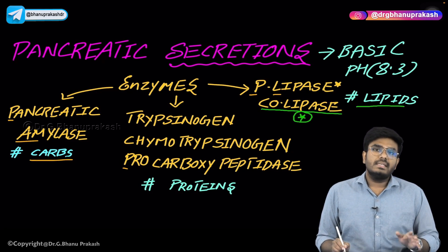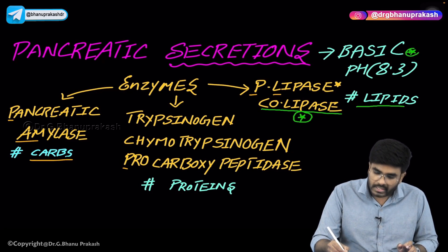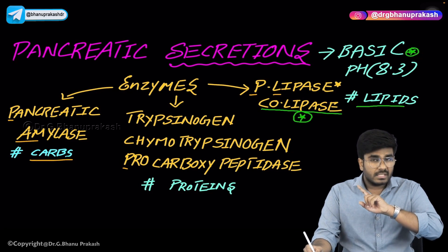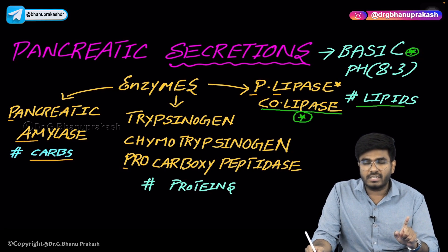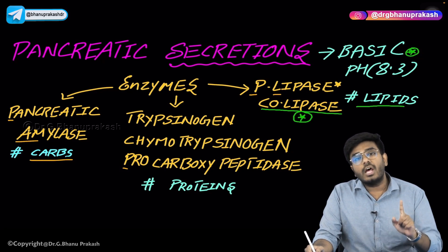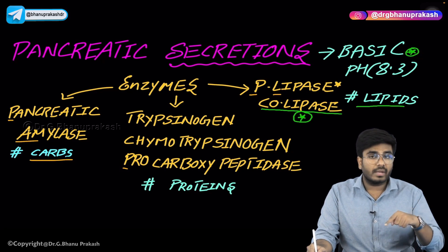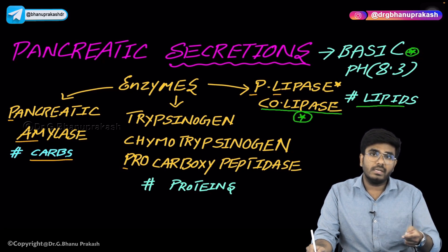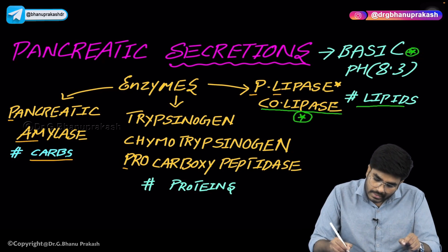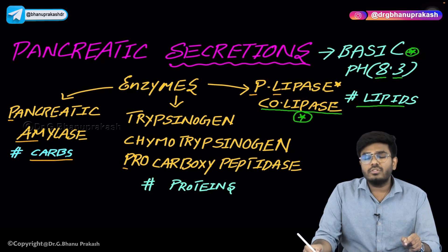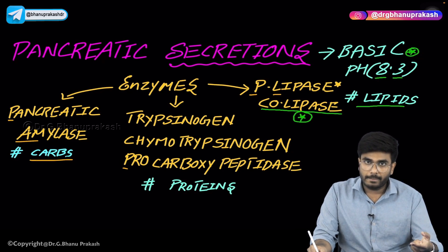One more important point: pancreatic secretions are highly alkaline in nature. However, this is not the most alkaline secretion in the GI tract. The most alkaline secretion in the GI tract is from the Brunner gland, produced inside the duodenum, with a pH of 8.9. Pancreatic secretions are also alkaline, with a pH of 8.3 — alkaline, but not the most alkaline.